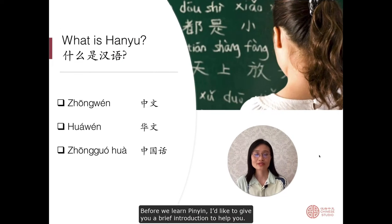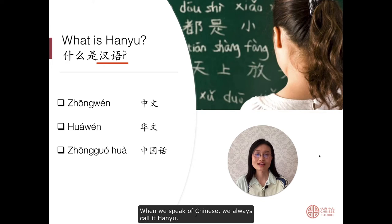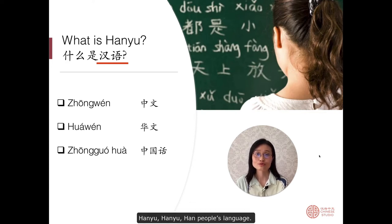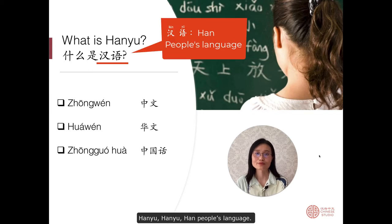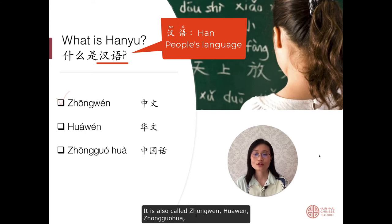Before we learn pinyin, I'd like to give you a brief introduction to help you. When we speak of Chinese, we always call it Hanyu. Why is it called Hanyu? Hanyu — the Han people's language. It is also called Zhongwen, Huawen, or Zhongguo Hua.